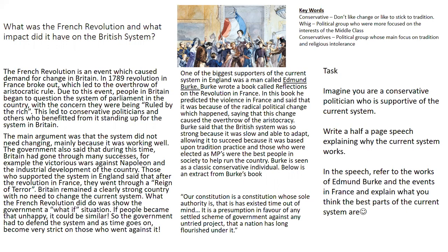We're going to look at what the French Revolution was and what impact it had on the British system. The French Revolution was a really big reason why the British government didn't want to change. In 1789 the revolution in France broke out, which led to the overthrow of aristocratic rule. Due to this, people in Britain began to question the system of parliament, with the concern they were being 'ruled by the rich.' This led to conservative politicians and others who benefited from the system standing up for it. People in Britain saw or heard what was happening in France and believed the system in Britain was outdated, and this made the government fearful.